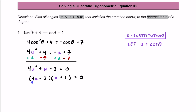Now using our zero product property, let's see when this is going to equal zero. So we have four u minus three equals zero. We can solve this by adding three to both sides first, giving us four u equals three. Then we divide both sides by four and find that u is going to equal three fourths.